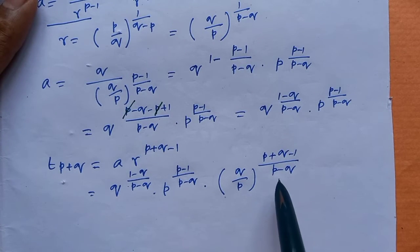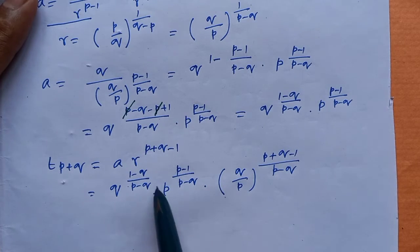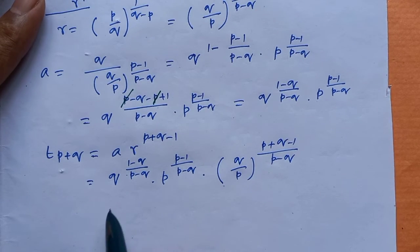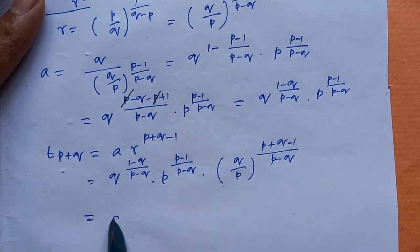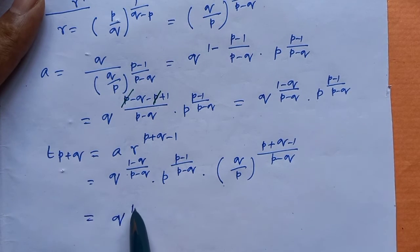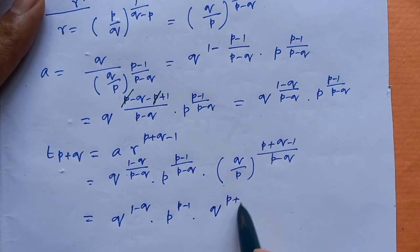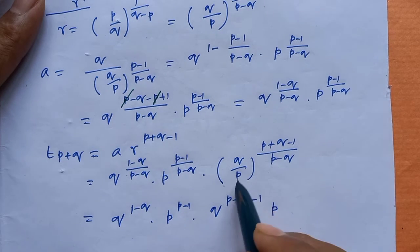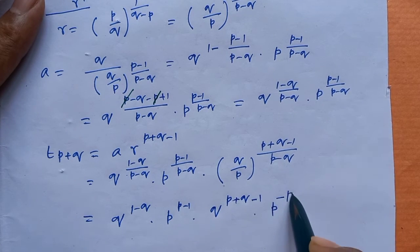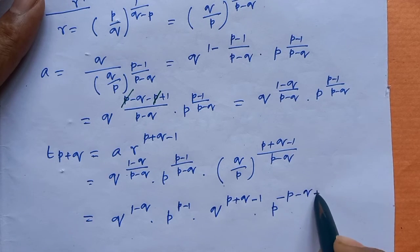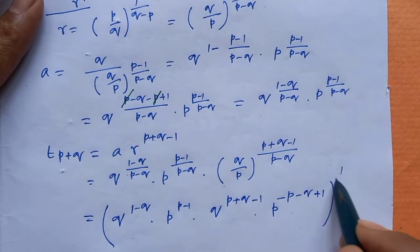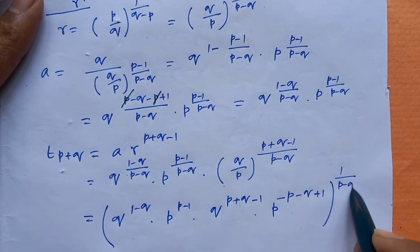We note that all the powers have the factor 1 by (p minus q). This equals q to the power (1 minus q) times p to the power (p minus 1), times q to the power (p+q minus 1), and p to the power [minus(p minus q plus 1)], whole to the power 1 by (p minus q).